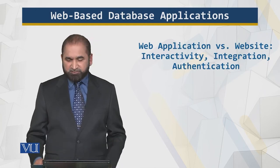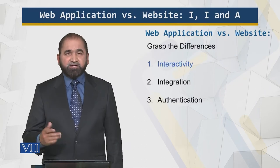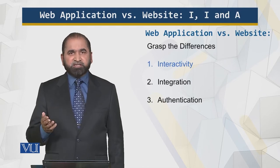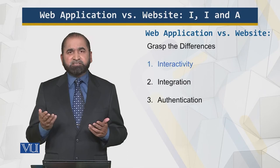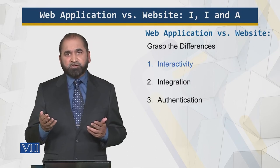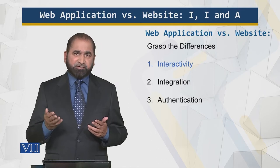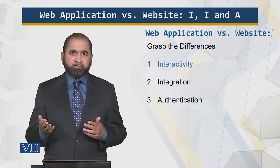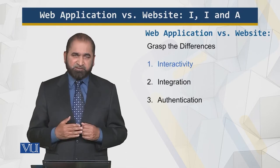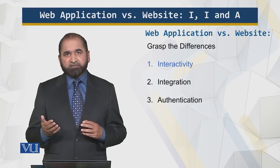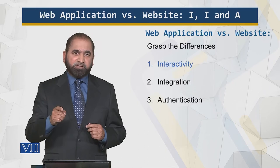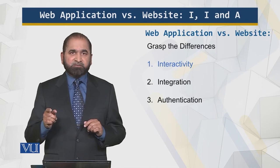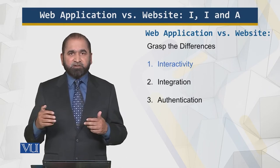Now let's look at the differences. Interactivity: for a website, a user goes there and looks at the data, reads the material, maybe reads the news, and the contents of the page cannot be changed by the user — they are not required to be changed. But for a web application, the user can press a button, type something in a text box, click on a radio button, check boxes, and the contents are changing — they are dynamically generated.